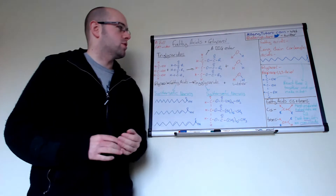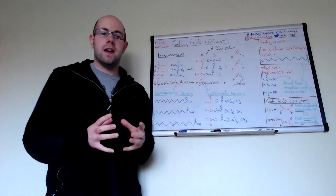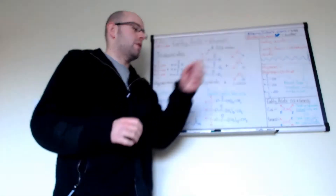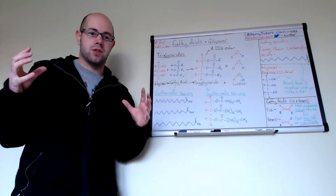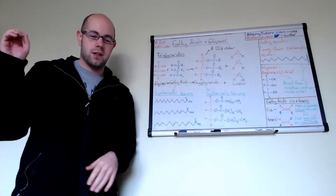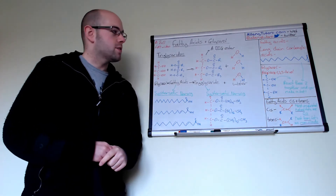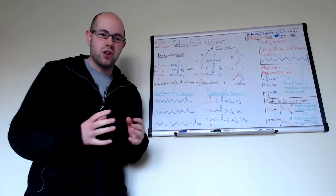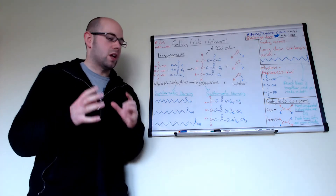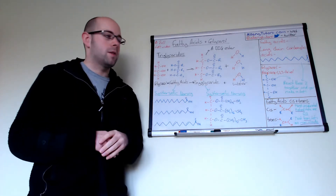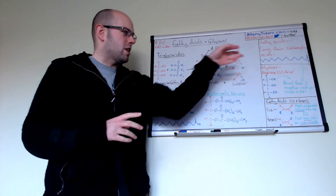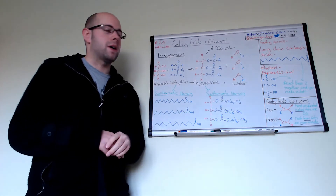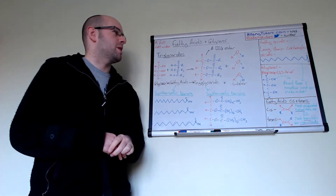A fatty acid is effectively just a long chain carboxylic acid. That means you have a very long hydrocarbon tail with a carboxylic acid group at the end. As you can imagine, these are not very soluble because of that large hydrocarbon chain, so they generally resemble waxes or solids — quite big molecules.